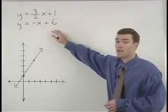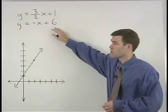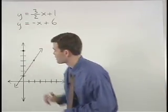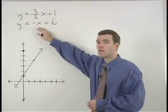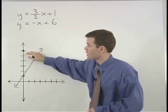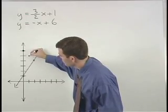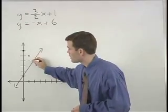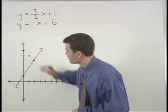For our second line, y equals negative x plus 6. It has a y-intercept of 6 — up 6 units on the y-axis. Its slope can be thought of as negative 1, or negative 1 over 1. So from our y-intercept, we go down 1 and to the right 1 to plot a second point. Notice that if we go down 1 and to the right 1 again, we reach our point of intersection.